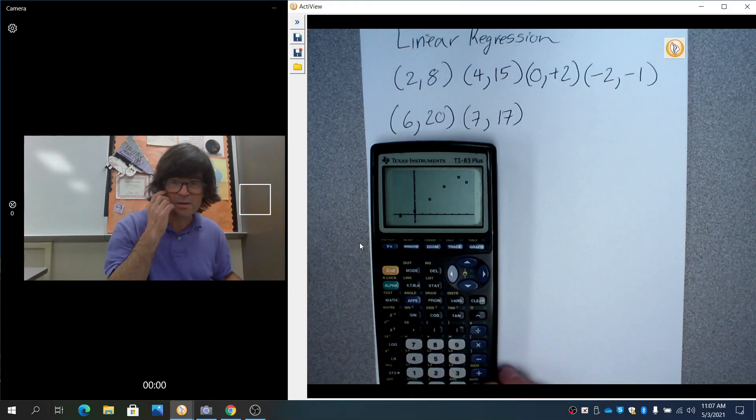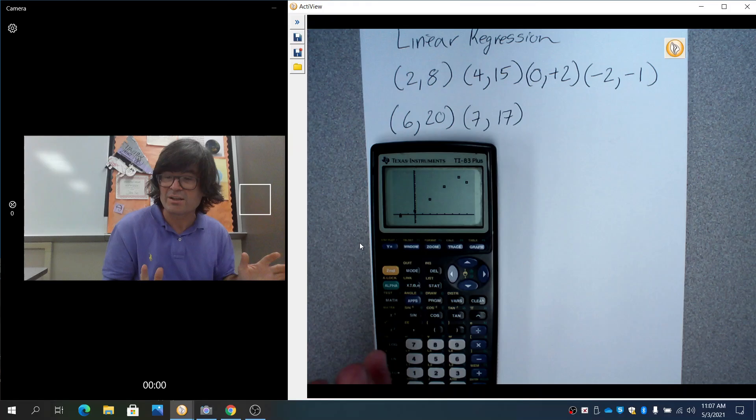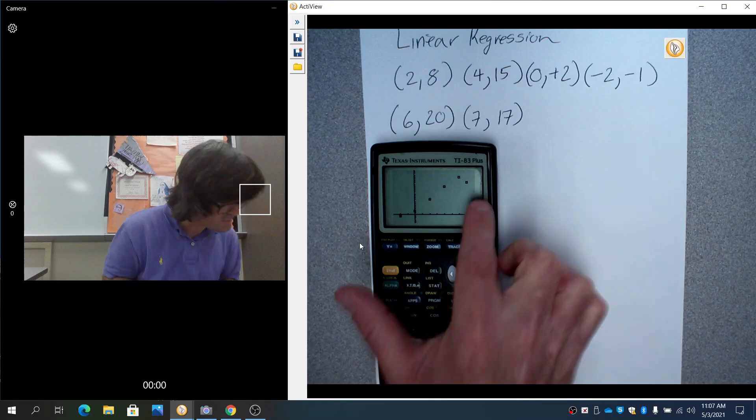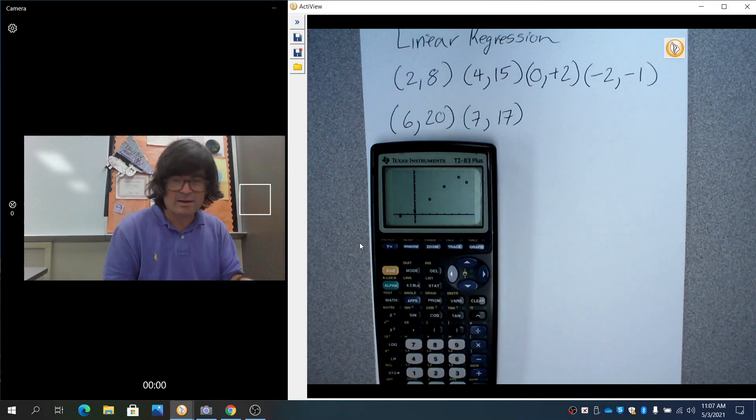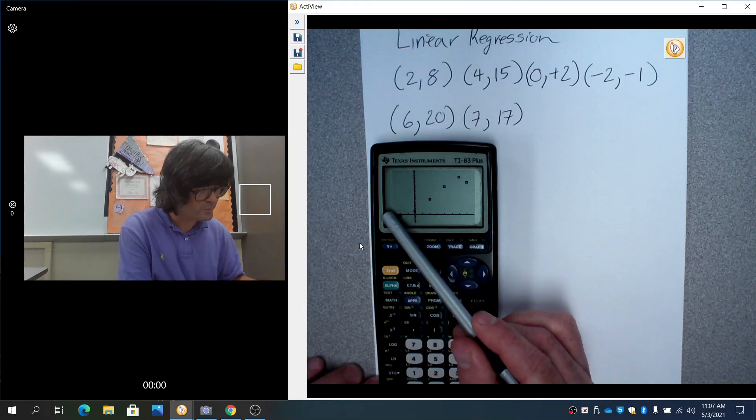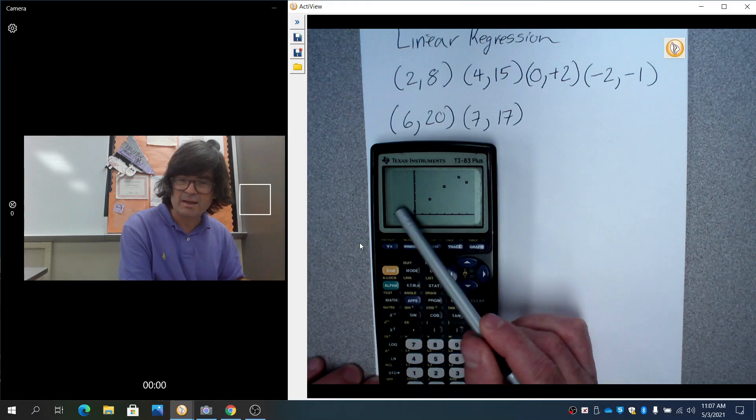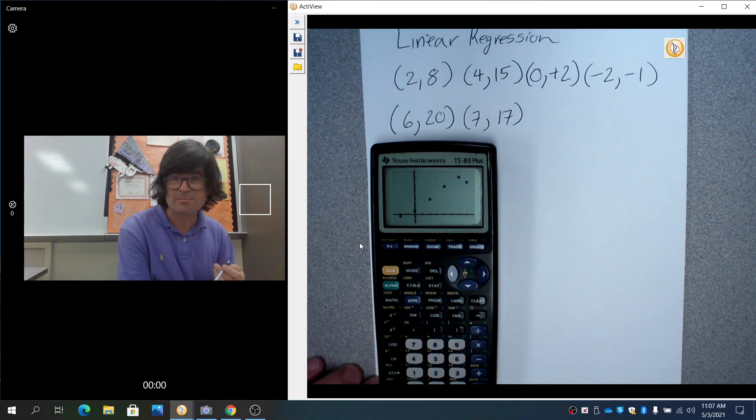What the calculator does is it finds all the points and then it makes a nice window that fits all of them. So these are 1, 2, 3, 4, 5, 6 - all six points there. And now let's just imagine my line here. It's going to kind of float through like that, it's going to just kind of be a line that goes through all the middle.